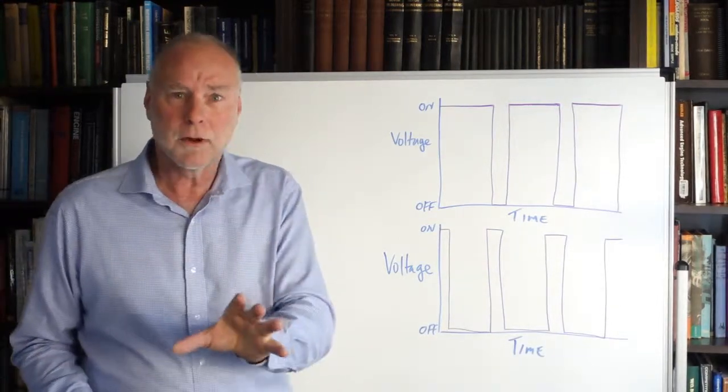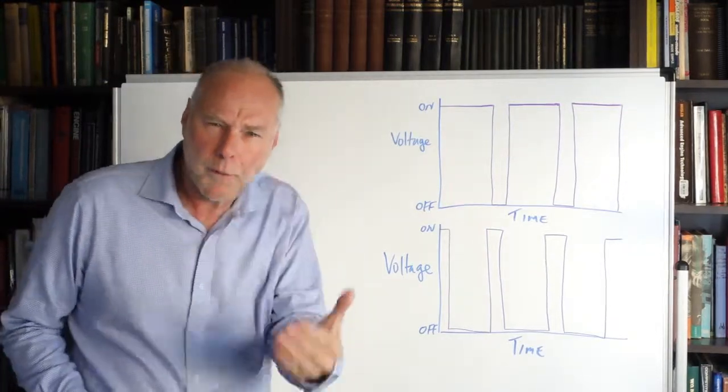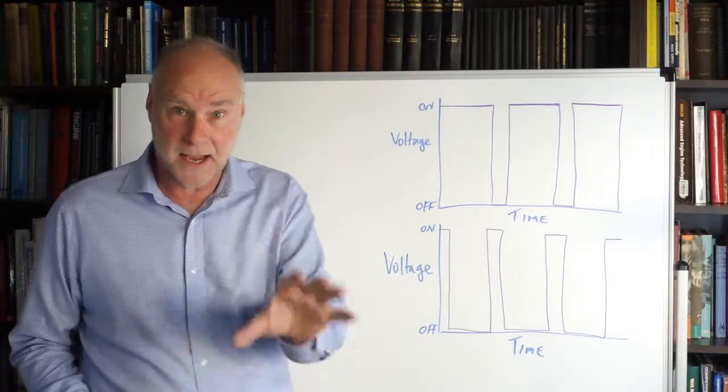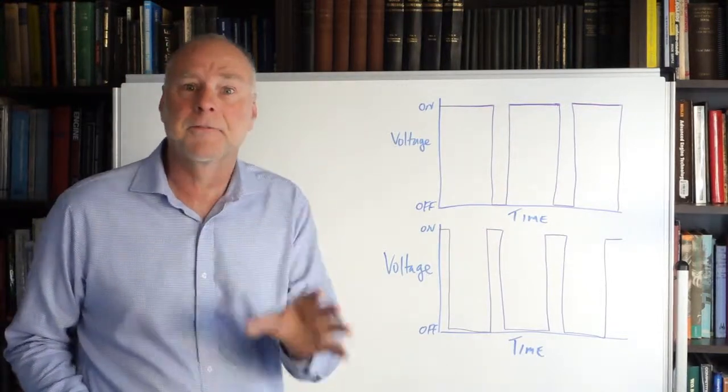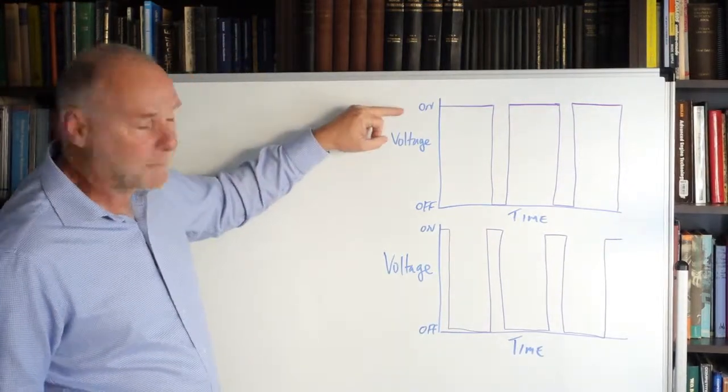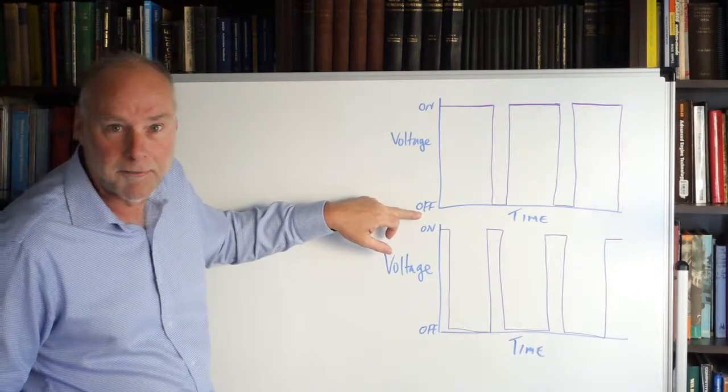Let's take a look at some graphs that I've drawn up on the whiteboard. What we're going to be doing is turning the voltage on and off that's actually going to the device, and we're going to turn it on and off for different amounts of time. Let's have a look at the top graph. Up the top we've got voltage is on, down the bottom we've got voltage is off.